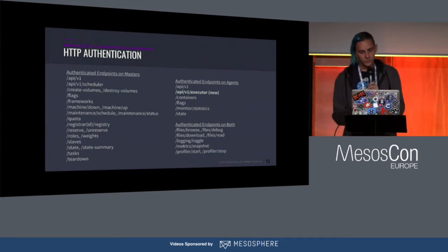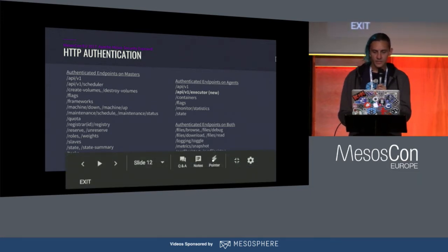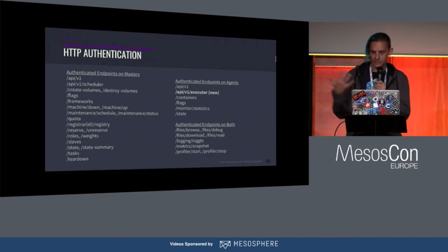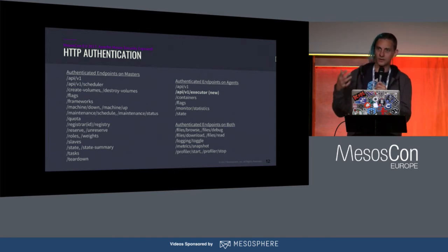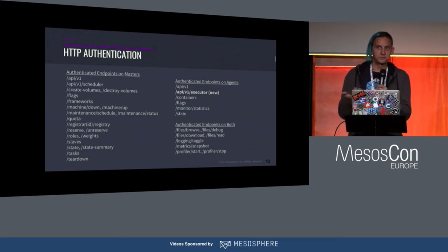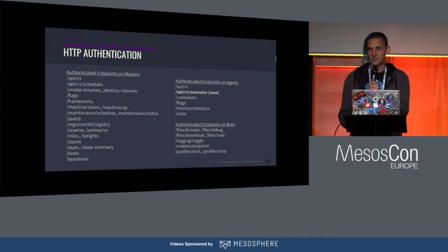For HTTP authentication, as of 1.0 we had a lot of these endpoints already authenticated. We recently added authentication to the v1 executor API, which Alexander will cover. By default we do HTTP basic auth, but again you can extend that with modules. There are a couple of unauthenticated endpoints — things like redirect or health — which don't expose sensitive information and don't allow modifications to system state, so that's acceptable and sometimes necessary to know a node is up before bothering to authenticate.